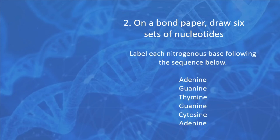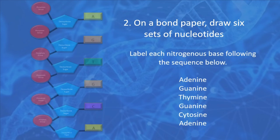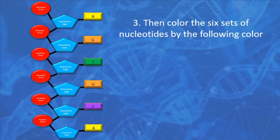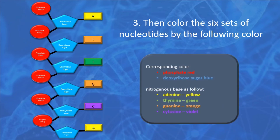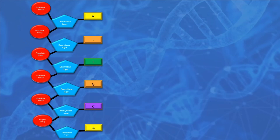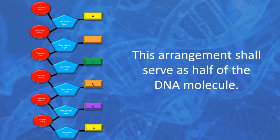Label each nitrogenous base following this sequence: first adenine, followed by guanine, thymine, guanine, cytosine, and adenine. Then color the six sets of nucleotides as follows: color the phosphate with red, deoxyribose sugar with blue, adenine with yellow, thymine with green, guanine with orange, and cytosine with violet. This arrangement serves as half of your DNA molecule.